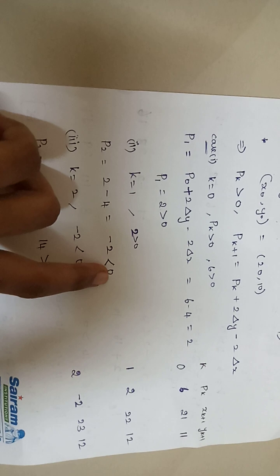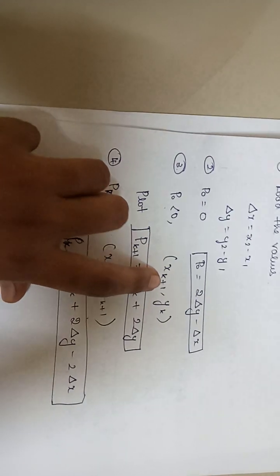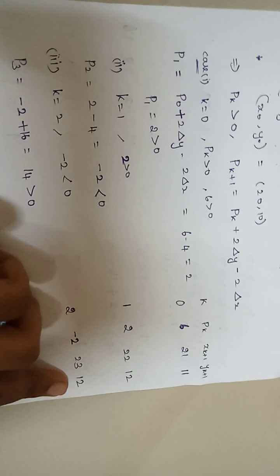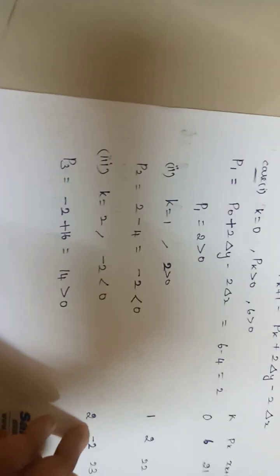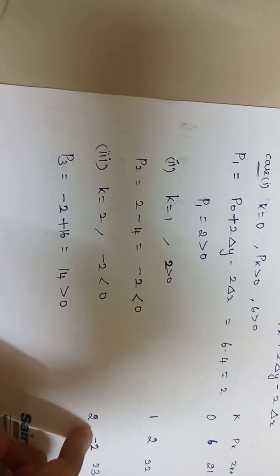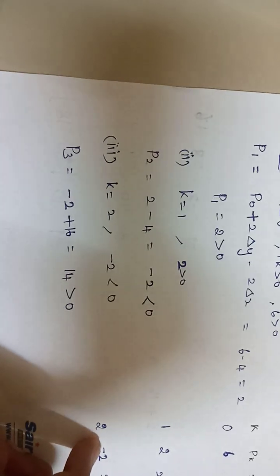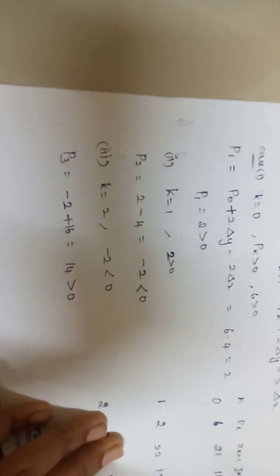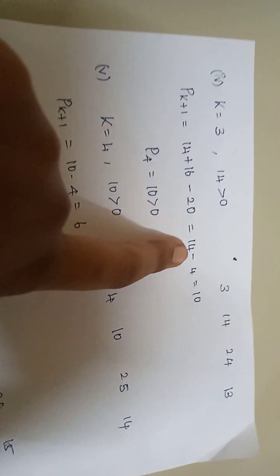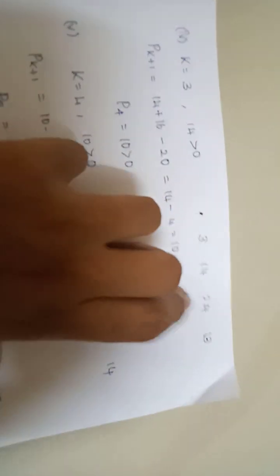Since 14 is greater than 0, increase both x and y. For k=3, Pk = 14 > 0, using the formula: 14 + (minus 4) = 10. So the next point is (24, 13). For k=4, Pk = 10 > 0, using the same formula: 10 minus 4 = 6. Since 6 > 0, increase both x and y to get (25, 14).